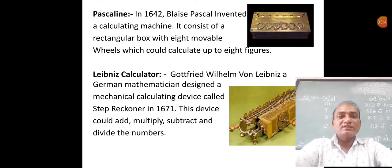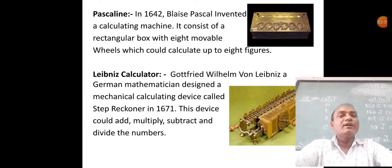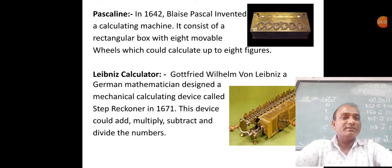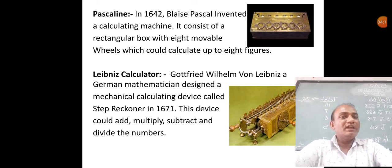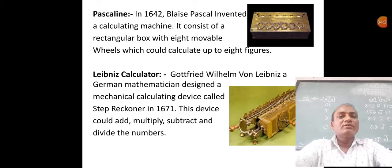The next computing device is the Leibniz Calculator. Gottfried Wilhelm von Leibniz, a German mathematician, designed a mechanical calculating device called the Stepped Reckoner in 1671. This device was able to perform addition, subtraction, multiplication, and division.